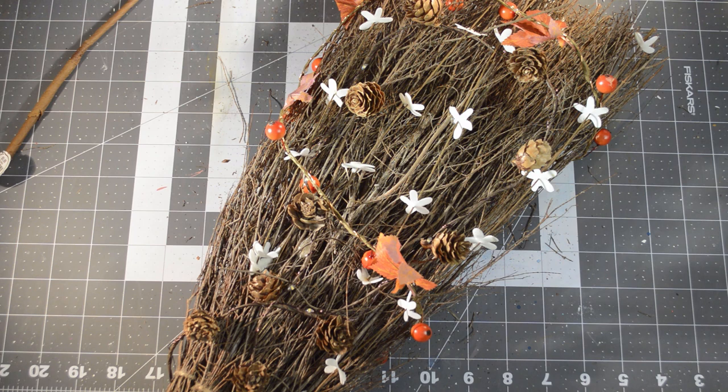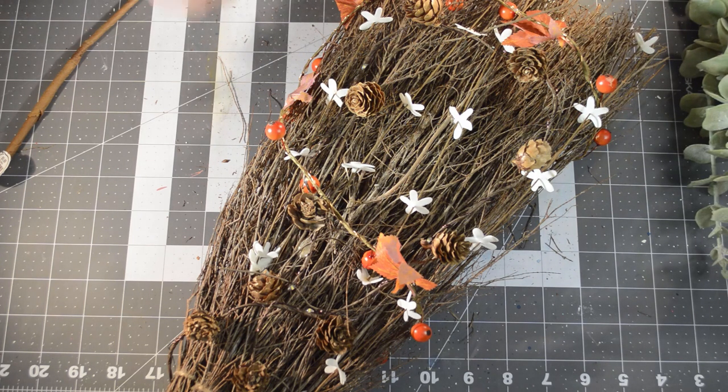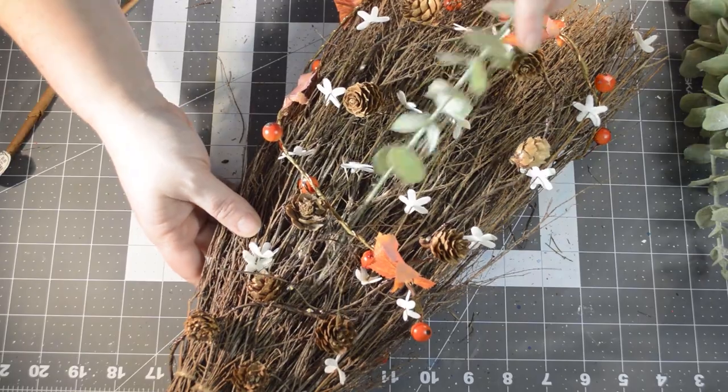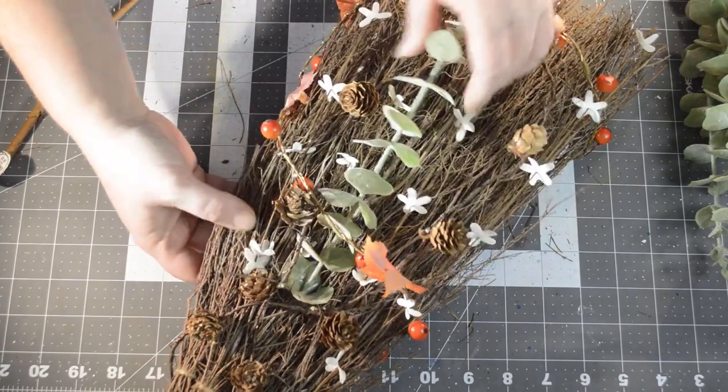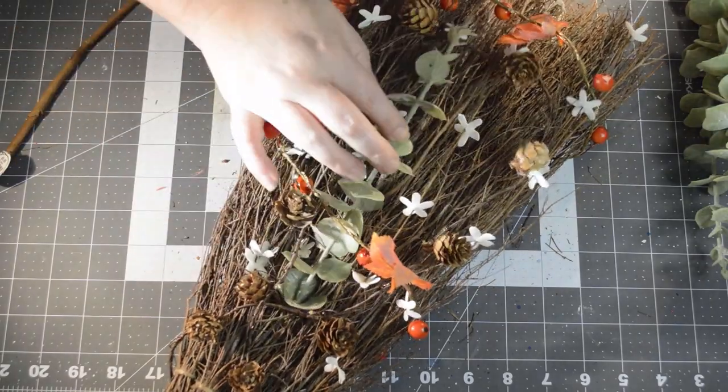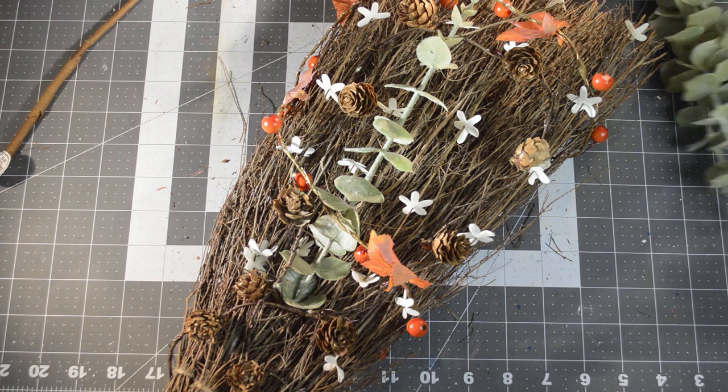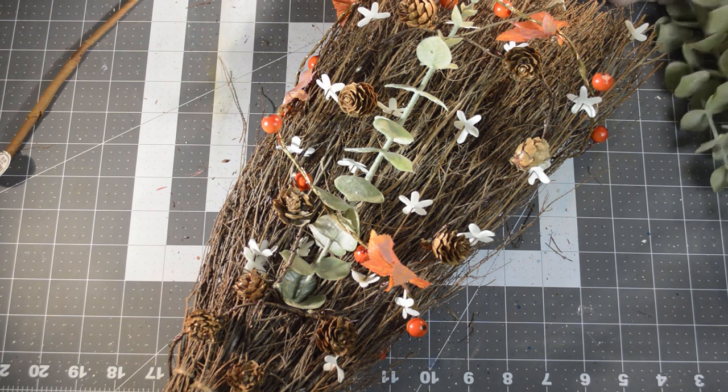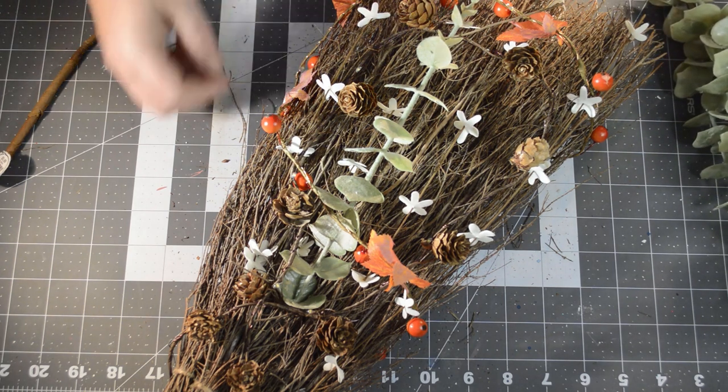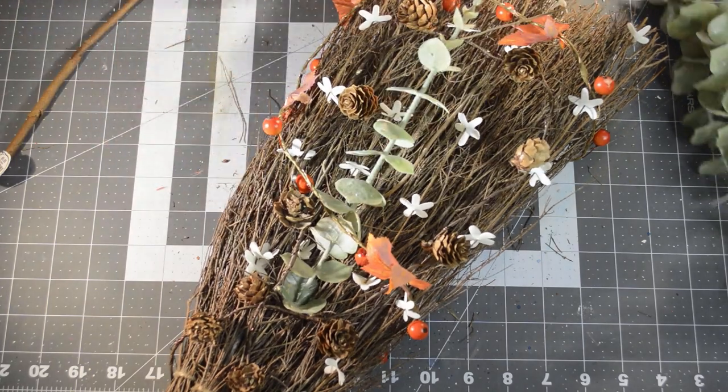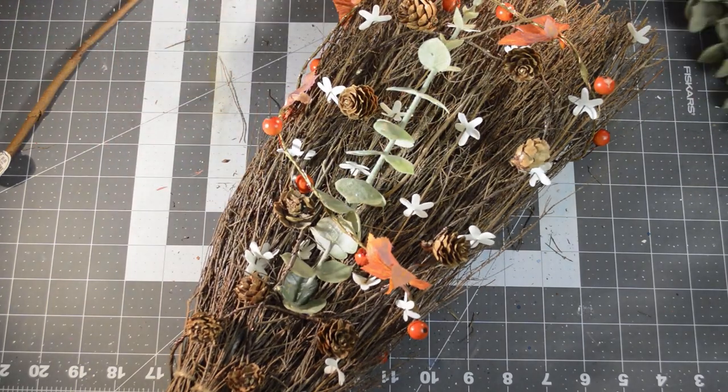Look at how pretty that is. And for the next part I'm going to use the greenery, the leftover eucalyptus that I have, and I'm going to do the same thing as I did with the little white flowers. Just pull out piece by piece and insert them into the broom where I think that they will look pretty and add a nice accent.